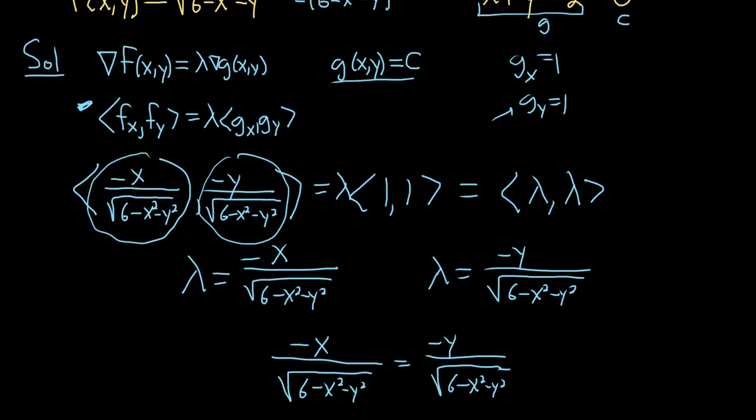At this point, you can just multiply both sides by the square root that's here. You could do that, and this is gone. So you get negative x equals negative y. Oh, look at that. So x equals y.